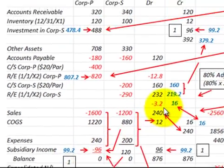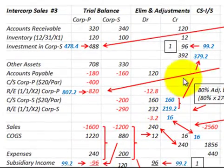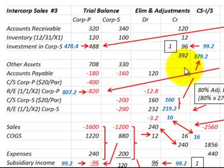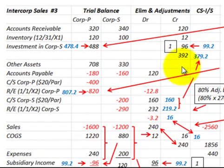There are a whole set of other corrections and adjustments that must be made when using the sophisticated equity method income versus the simple equity method income, and these are complicated because of inconsistencies between the parent's accounts and the subsidiary's accounts.